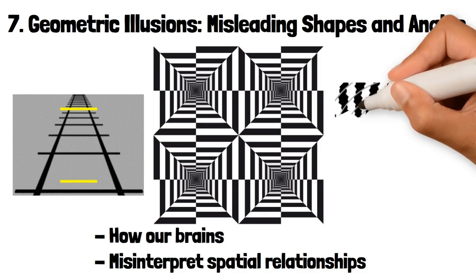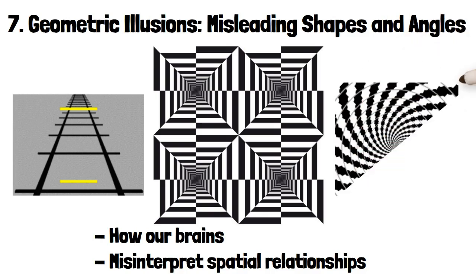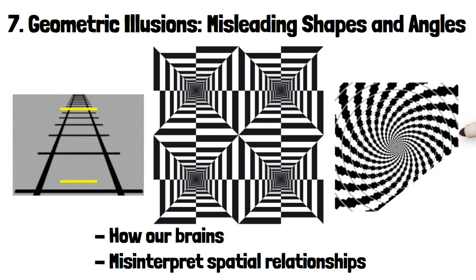Similarly, the Café Wall Illusion involves a grid of tiles that appear to be slanted or curved due to the alternating colors of the tiles and the lines separating them.